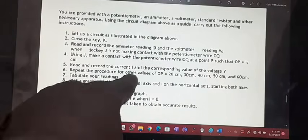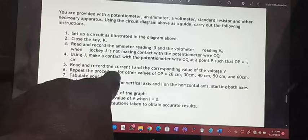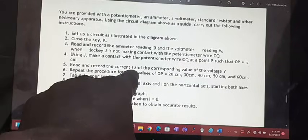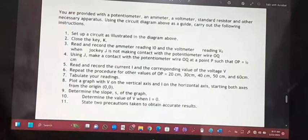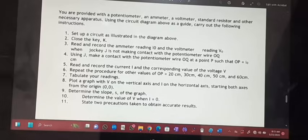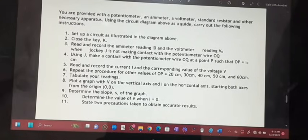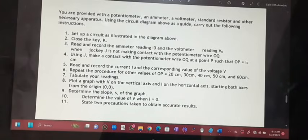Then we are going to determine the current. We are going to read the current I and the voltage. So these are the three values that we will be requiring on the table. I'm going to draw that table now, and then we will continue with the experiment.